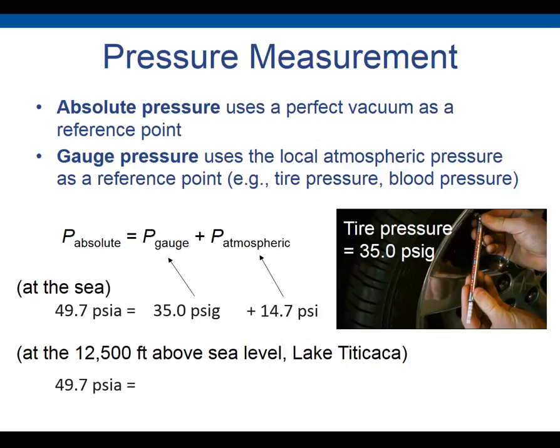At 12,500 feet above sea level — like Lake Titicaca, which is very high compared to sea level — the absolute pressure should remain the same. But the air pressure will be lower because of the high altitude. With less air at high altitude, your tire air pressure reading will increase and the tire will become bigger.